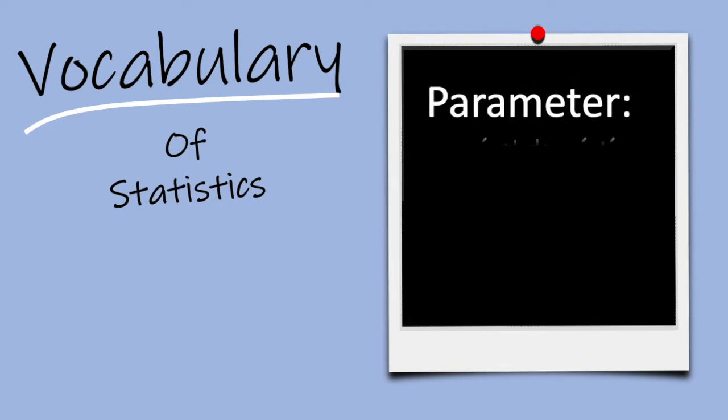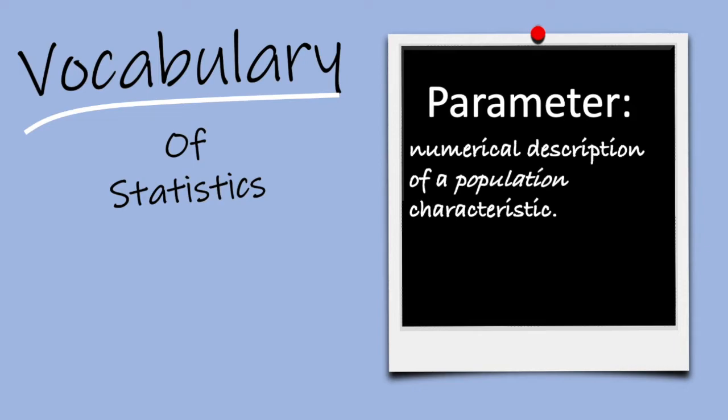Next word is parameter. A parameter is a numerical description of a population characteristic. Let me say that again. A parameter is a numerical description of a population characteristic.